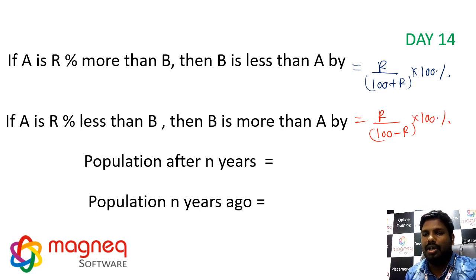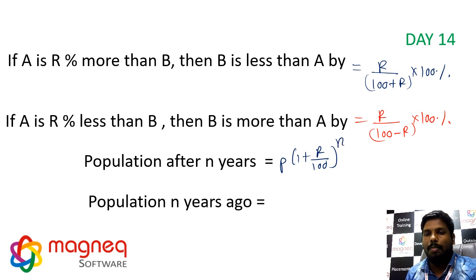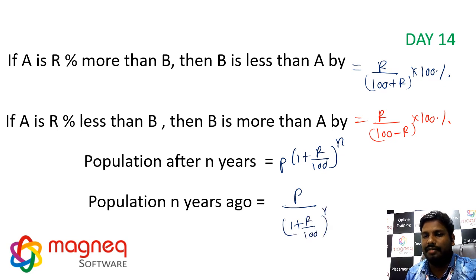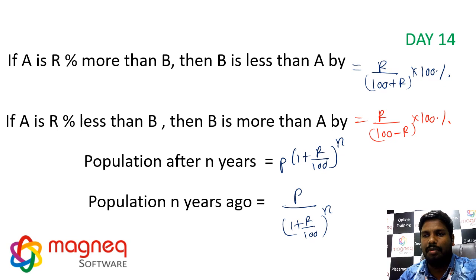Population after N years formula: P into (1 plus R by 100) whole power N. Population before N years formula: P by (1 plus R by 100) whole power N. These are important formulas.